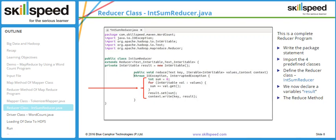The reduce method takes a key-value pair as input — the key is Text type and value is IntWritable type. It is called once per key, so five keys means five calls. A variable 'sum' is initialized to zero; all values for a key are added into 'sum'. Then 'sum' is set to the result variable and context.write outputs the final result. The output will be values like bill:4, don:4, jack:6, jo:4.